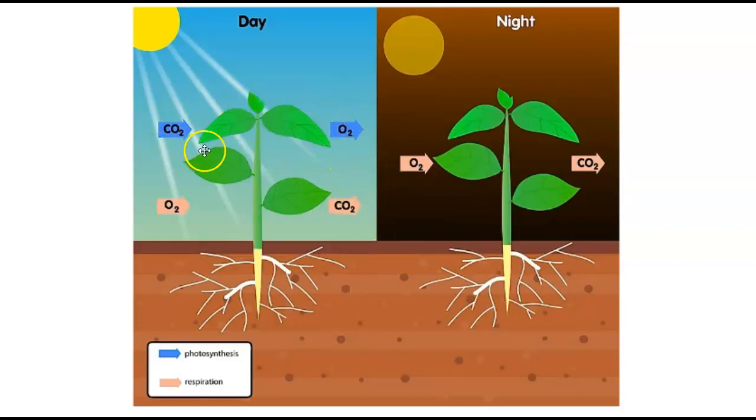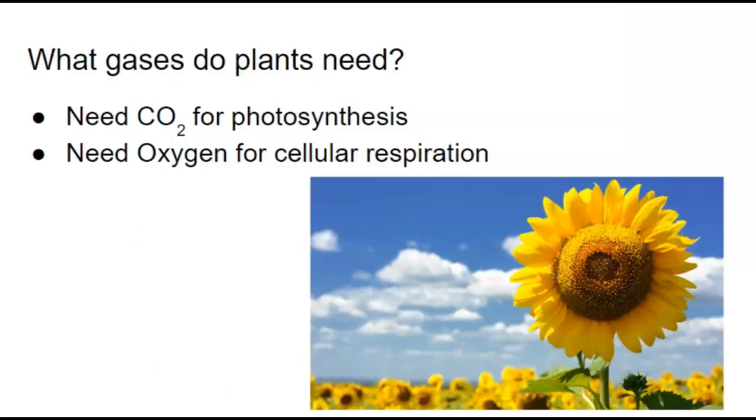Remember, photosynthesis is to make the sugar. Cellular respiration is to make the energy. At night, when we no longer have sunlight, we can't do photosynthesis, so we're only doing cellular respiration. So plants need not only oxygen but also CO2. So they're a little bit different than humans. So the first thing we're going to write down is that plants need CO2 for photosynthesis and oxygen for cellular respiration.